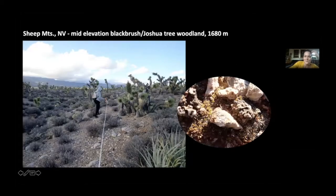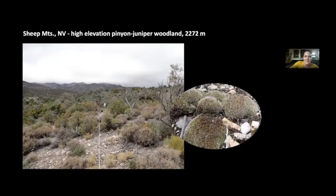This is the mid elevation site in a Joshua tree woodland. You can see it's getting a little more mesic. And then this is the high elevation site, that pinyon juniper woodland. We actually had a rain event, the first rain event of the season actually, the night we were there. So that's why all the moss was hydrated. It was very hard to identify them actually in that state because I'm not used to seeing them wet.